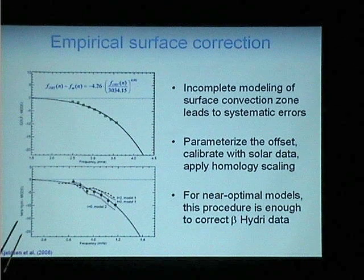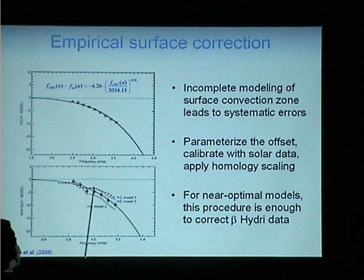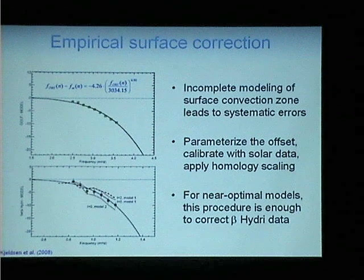This empirical surface correction seems to work well. In the initial paper, they applied it to several stars with solar-like oscillations detected from the ground, including beta Hydri. The parameterized value from the solar correction describes the surface effects in near-optimal models of beta Hydri as well. We've applied it to a large number of Kepler targets and it appears to work well across the HR diagram.